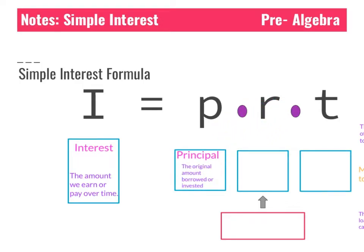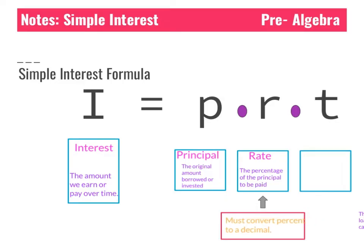The principal is the amount of money that we borrow or the amount that we invest. Then we have R, which stands for rate. Rate is the percentage of the principal to be paid. In order to use this in our formula we need to make sure that we convert the rate to a decimal — it's usually shown as a percent, and we must convert it whenever we use it in our formula.